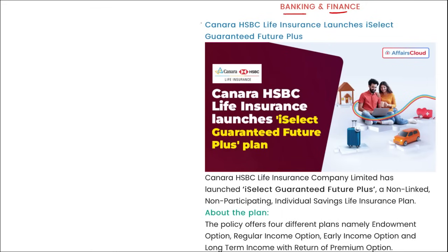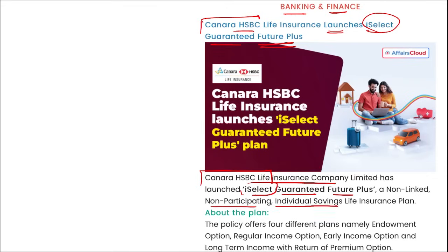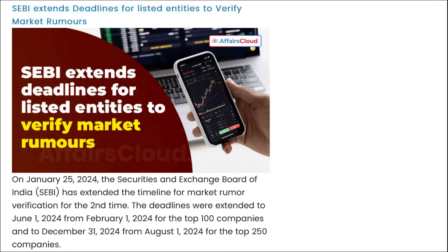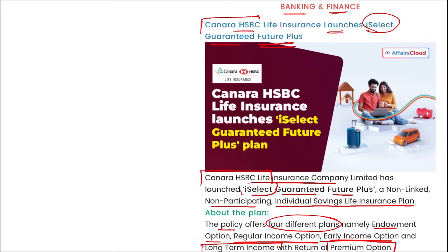In banking and finance: Canara HSBC Life Insurance launched 'iSelect Guaranteed Future Plus,' a non-linked, non-participating individual saving life insurance plan. It offers four plan options: endowment option, regular income option, early income option, and long-term income with return of premium option. The minimum entry age is zero and maximum entry age is 65 years. Minimum maturity age is 18 years and maximum maturity is 99 years.